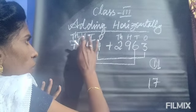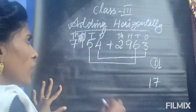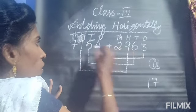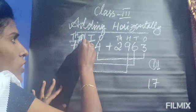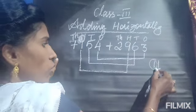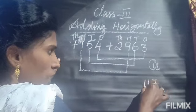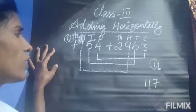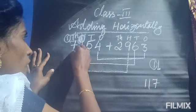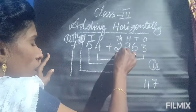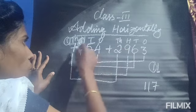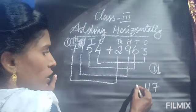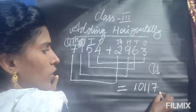We carry that one to the hundreds place. Now add the hundreds place: here it is 1 and here it is 9, plus the carry-over of 1, so 9 plus 1 plus 1 is 11. Again only the right-side digit goes here, and we carry 1 to the thousands place. Now in the thousands place, 7 and 2 plus the carry gives us 10. So the answer is 10,117.